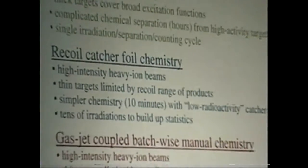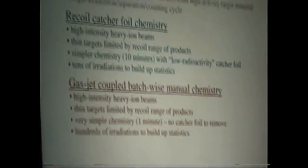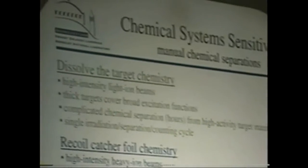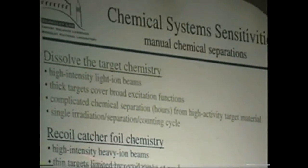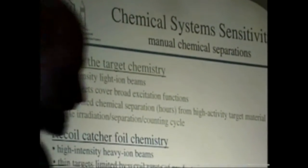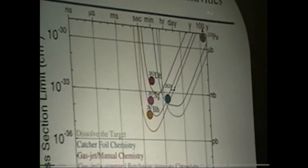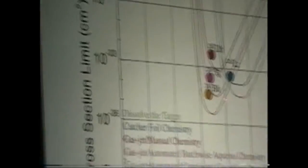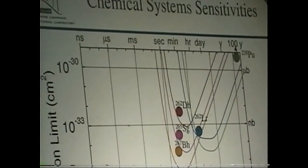That's characterized by high-intensity light ion beams. Because they were using light ion beams with a low dE/dx as it passes through the target, they were able to use thick targets to cover the full broad excitation function. However, they had to dissolve this target, which was actually in many cases a large amount of radioactivity, and therefore had to do complicated chemical separations, which took up to hours. Typically these experiments would be a single irradiation separation and counting cycle. The cross section is way up here somewhere, but you can see the sensitivity of the technique really does come down here to the 100 nanobarn level.